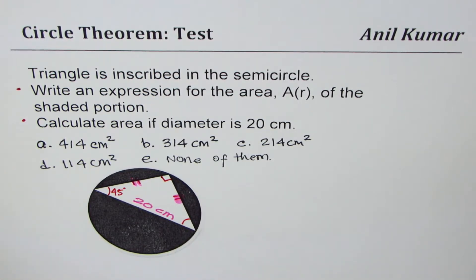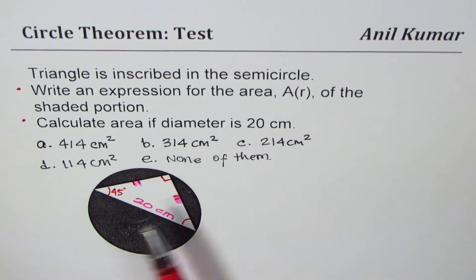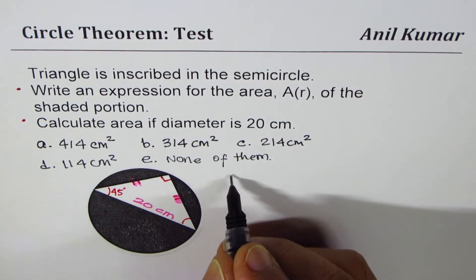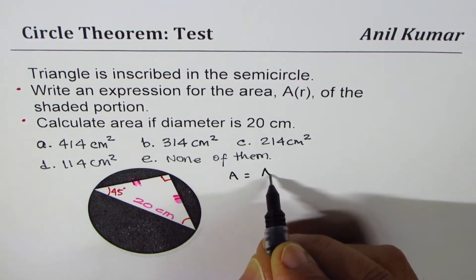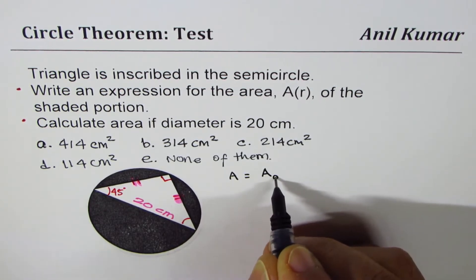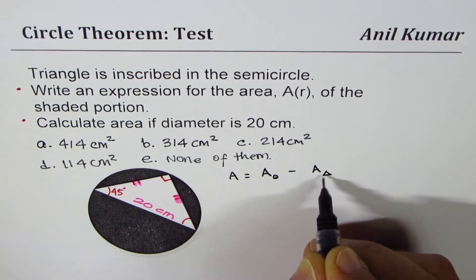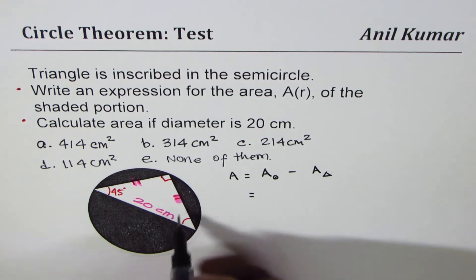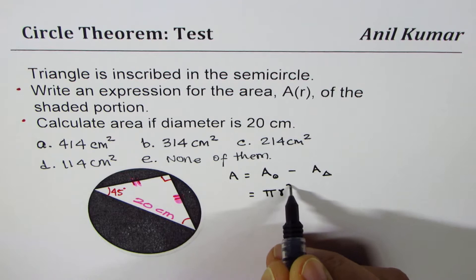Now, let's begin from here. We need to find an expression for area of the shaded portion. So what is that? Area of shaded portion is equal to area of circle, take away area of the triangle. So area of circle is pi r square.